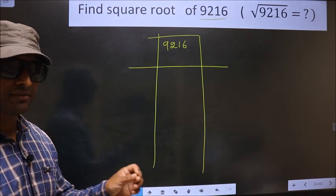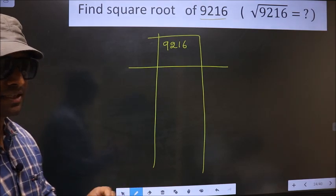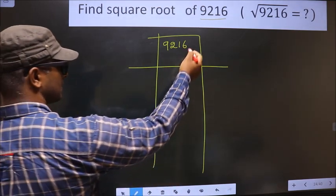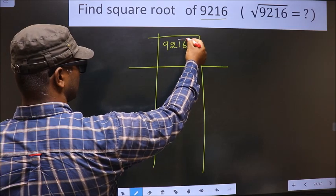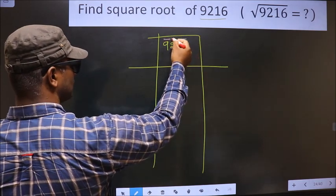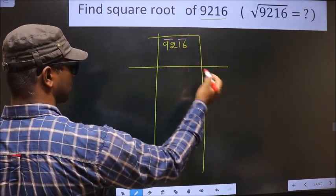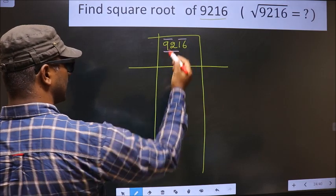Now we should divide the given number into pairs, starting from this side. So these two numbers, one pair, and these two numbers, another pair. Now here we have 92.